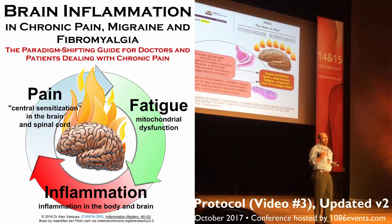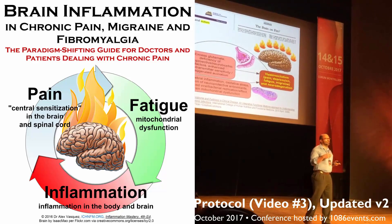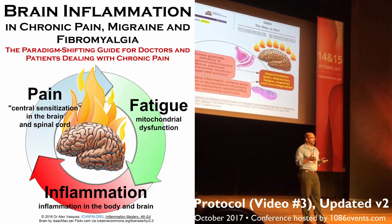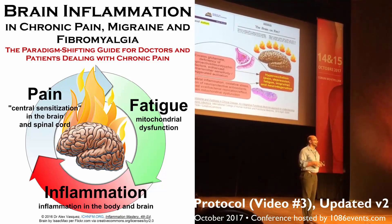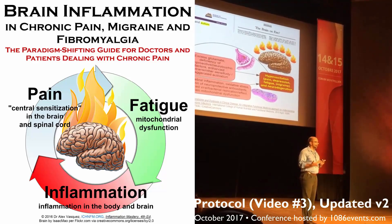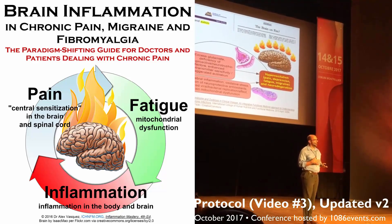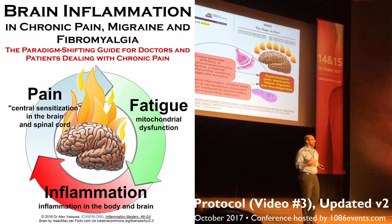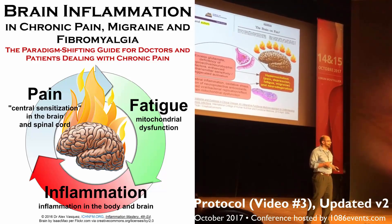Because their mitochondria are more fragile, that makes the entire brain more fragile and more vulnerable to hormonal fluctuations, stress, light exposure, etc.